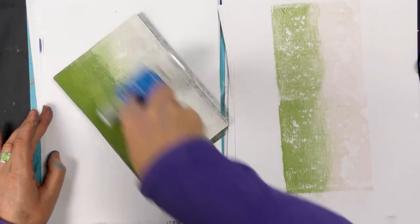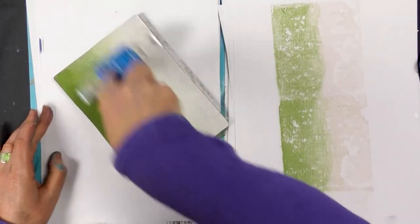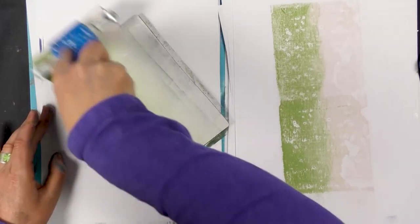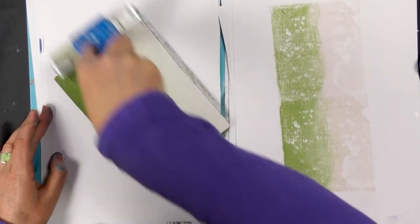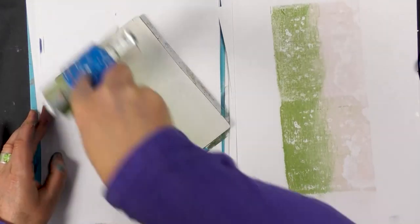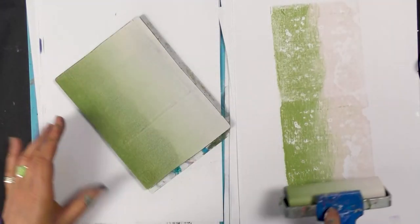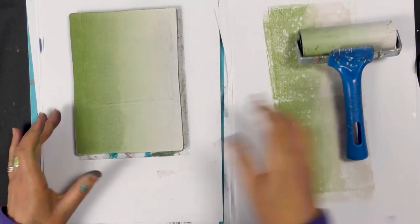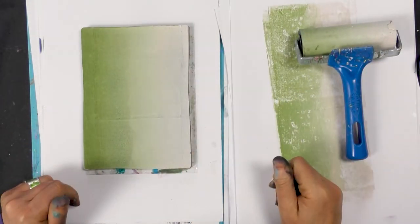I don't want too much on there so just be mindful of that. I'm going to just blend that and that gives us a really nice sort of pale green crossing over into the white.